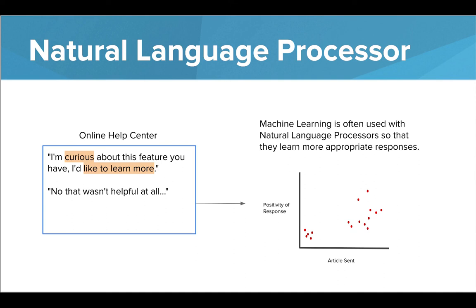Based on the response, the chatbot can track how positive the response is based on the article that they sent. The chatbot is now learning which articles should be sent depending on the question that it's being asked. It's in this way that machine learning and NLP as well as other types of AI are used in conjunction with one another to produce a meaningful and intelligent result.